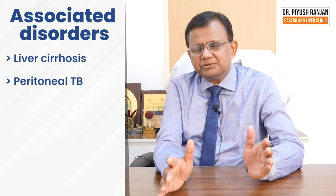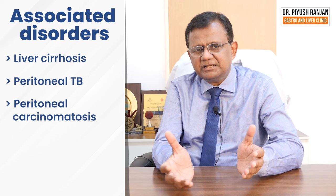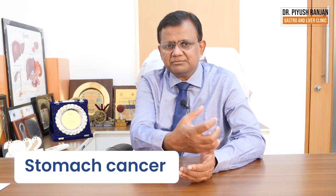Now in our specialty of gastroenterology, when we look at ascites, there are three main diseases related to the liver and abdomen. The first and most common cause is liver cirrhosis. Another disease is peritoneal tuberculosis. The third is peritoneal carcinomatosis — cancer from abdominal organs such as stomach cancer, pancreas cancer, and ovary cancer.